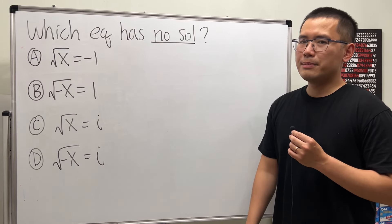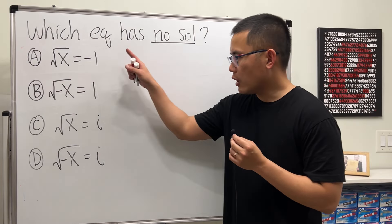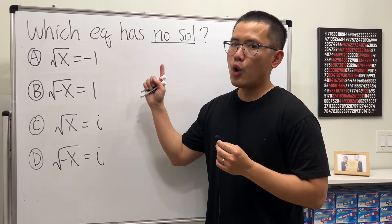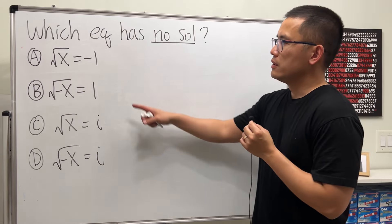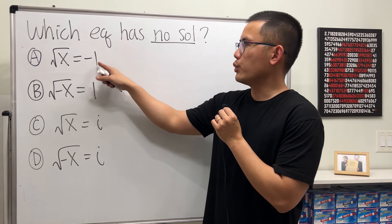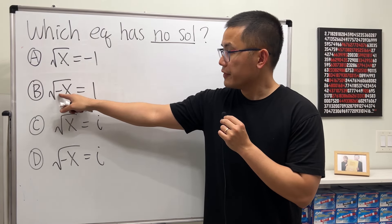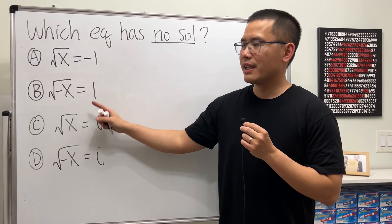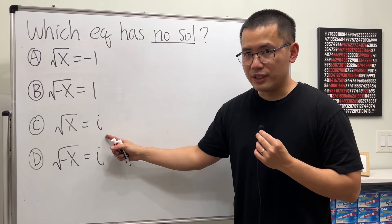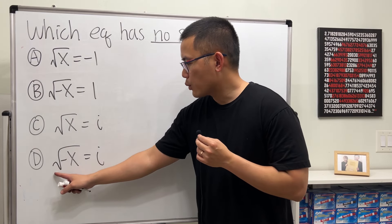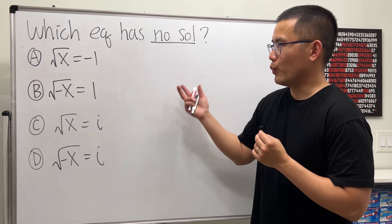Let's talk about this question that I posted on my Instagram. We would like to know which of these equations has no solutions, not even in the complex world. The first one is square root of x equals negative 1. Next, square root of negative x equals 1. Then square root of x equals i, the imaginary unit. And finally, square root of negative x equals i. So what do you think?